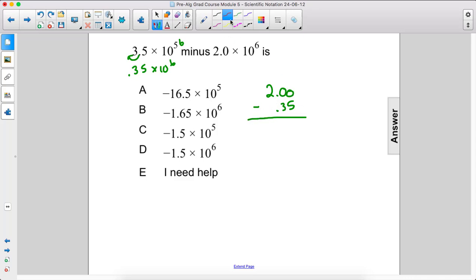All right, so we need to borrow. All right, 10 minus 5 is 5, 9 minus 3 is 6, decimal 1.